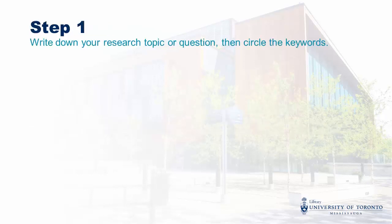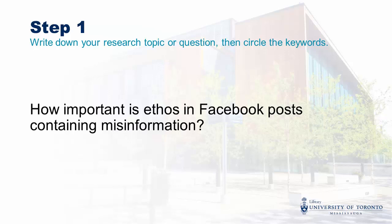The first step is writing down your research topic or question. We'll use an example about misinformation and social media. Let's say that our chosen text is an anti-vaccination post in a Facebook group. One of the questions we might ask is: how important is ethos in Facebook posts containing misinformation?